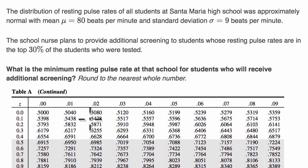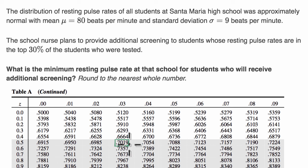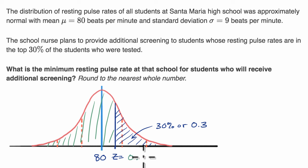Starting at 50% here, we want to get to 67%, 68%, 69% — we're getting close. On our table, the lowest z-score that gets us across the 70% threshold is 0.53, corresponding to a cumulative probability of 0.7019. A z-score of 0.52 is too little, so we need a z-score of 0.53. Now we just have to figure out what value gives us a z-score of 0.53.